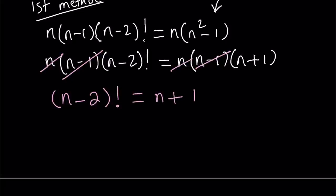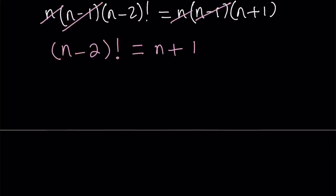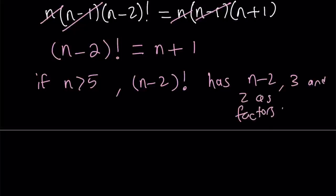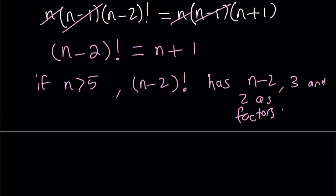Now, at any point, if you have a factorial equation, you can just plug in some numbers. At this point it's probably a little easier because you know that the factorial is going to grow faster than a polynomial. But we want to find some upper bound for this. So if n is greater than 5, consider the n minus 2 factorial. It is going to have n minus 2 as a factor. n minus 2 factorial has n minus 2, 3, and 2 as factors. Because I want to compare n minus 2 factorial to n plus 1.